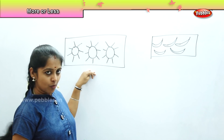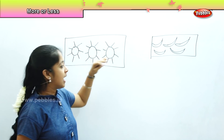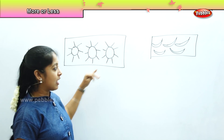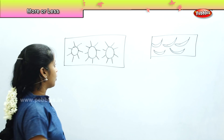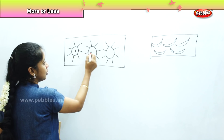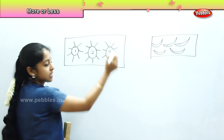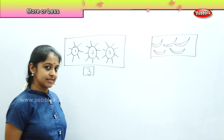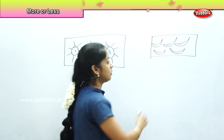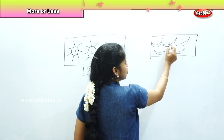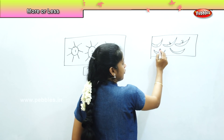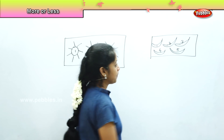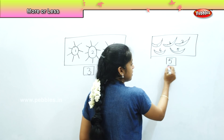Now here in this box we have got sun, and in this box we have got moon. Shall we count how many suns and how many moons are there in each box? We have one, two and three suns. So there are three suns in this box. Now in this box, how many moons are there? It is one, two, three, four and five. So there are five moons in this box.